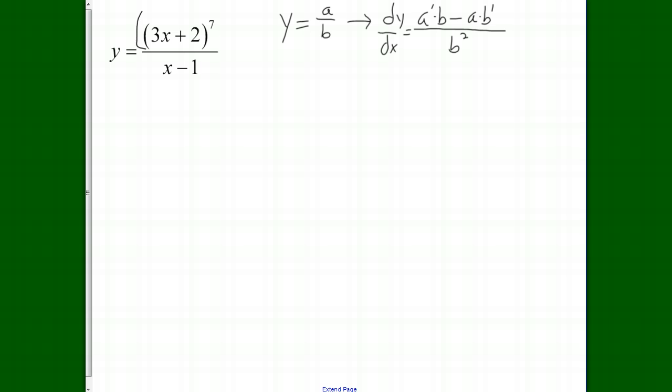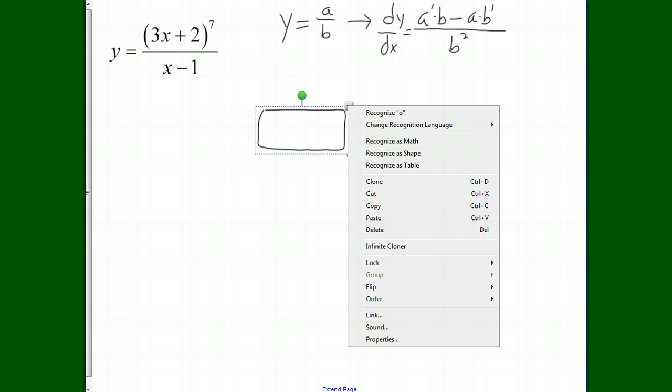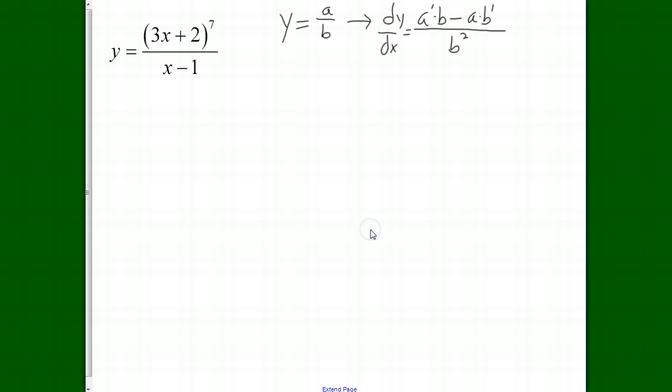But the numerator, this part right here, to find the derivative of that requires the chain rule because it's a composite function. So here we go. dy over dx, finding the derivative. Once again, it is a fraction, quotient rule is where we're starting.